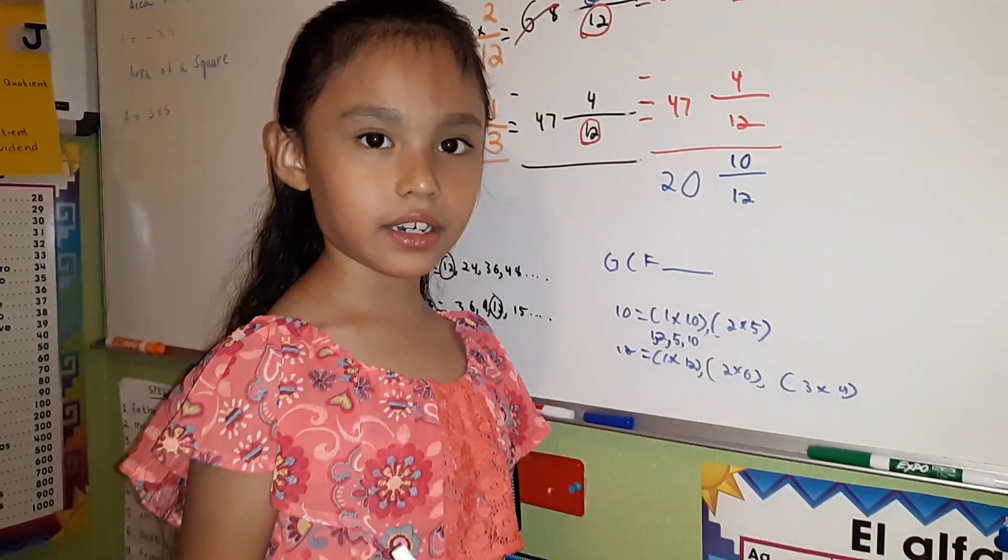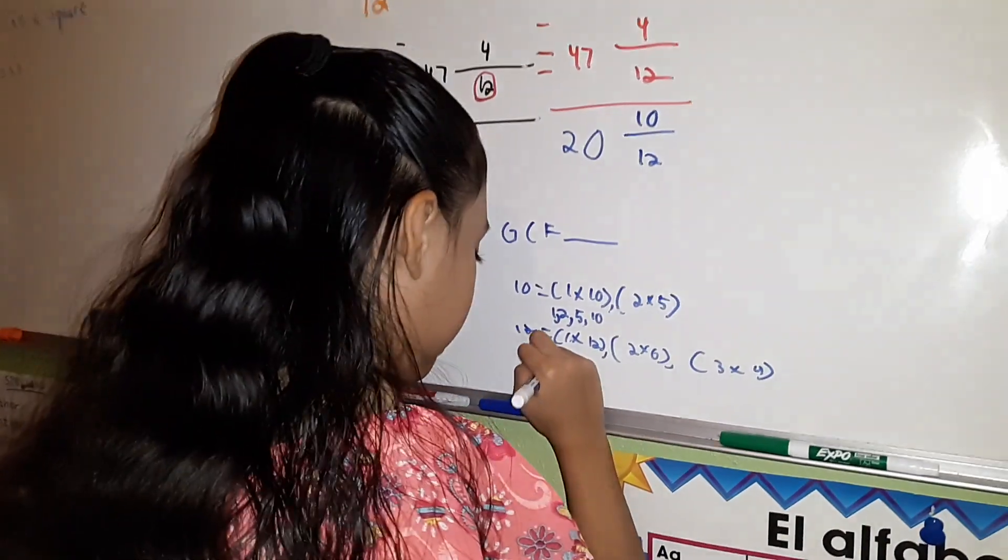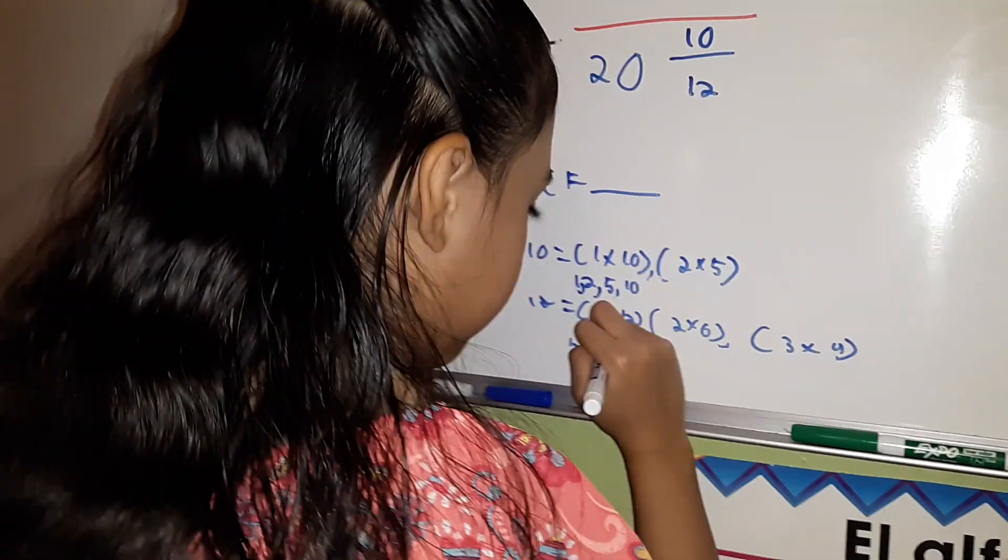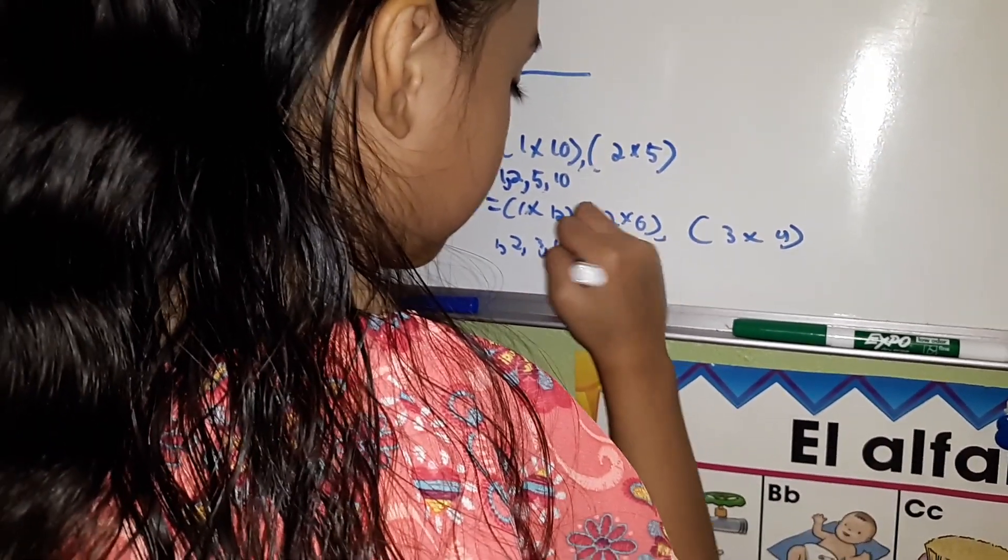I'm going to write down our factors from least to greatest: 1, 2, 3, 4, 6, and 12.